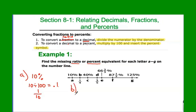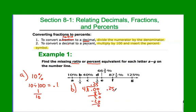Problem B: one-fourth. Remember, to change a fraction to a decimal, divide the top by the bottom. So one inside, four outside — a little long division. We get 0.25. Then we multiply 0.25 times 100 — move the decimal twice — and this is 25 percent.